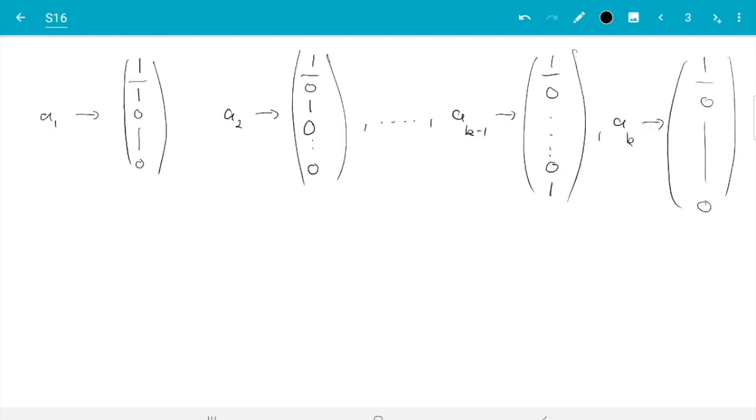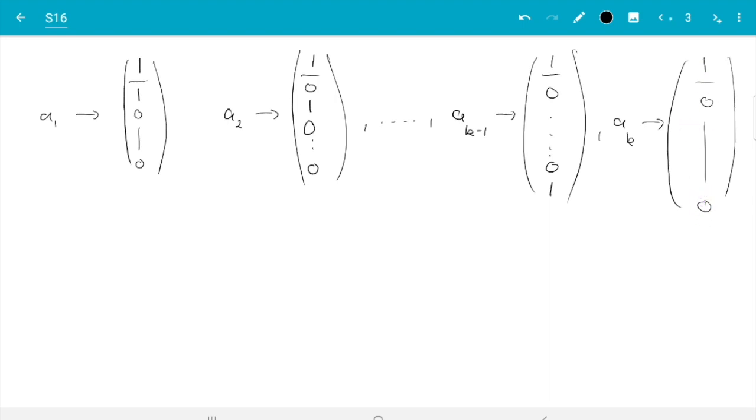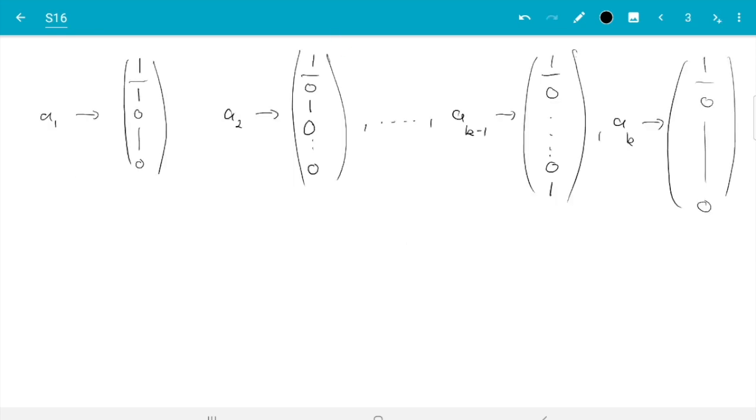Good. So that's what we need. We need k vectors here, which are linearly independent. So they span k-dimensional space. And I wrote column vectors here. We got that, the normal way to write vectors, but they will turn into rows in the design matrix. And now the question is, what else could one do?